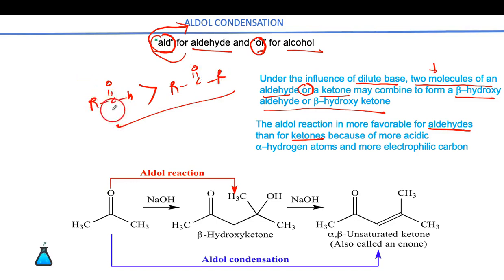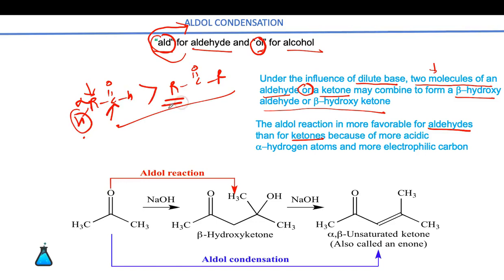The reason is that the carbonyl carbon is less sterically hindered, and the alpha-position carbon having hydrogen is more acidic compared to the ketonic group. So let's start with the aldol condensation reaction mechanism.